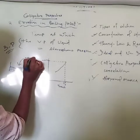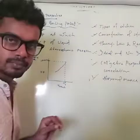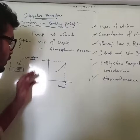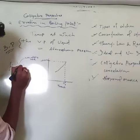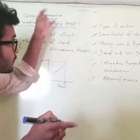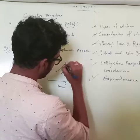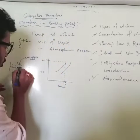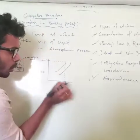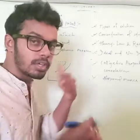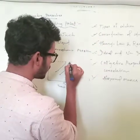Now we are adding some non-volatile solute to that container. The presence of non-volatile solute will cover up some surface area, so the vapor pressure will decrease. Because of this, the graph shifts — the vapor pressure is lower on the x-axis, and it requires more temperature to achieve that boiling point.